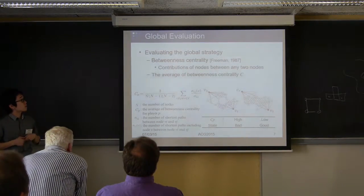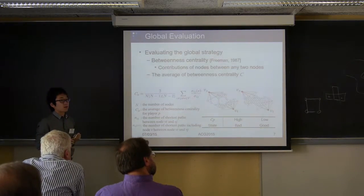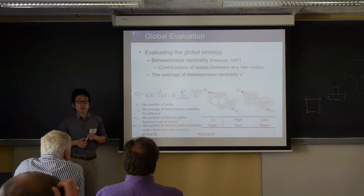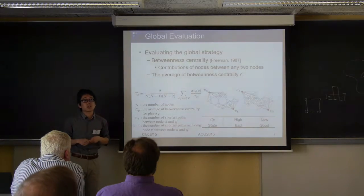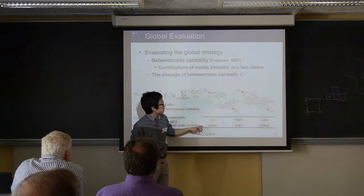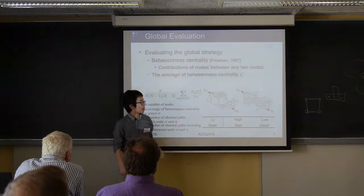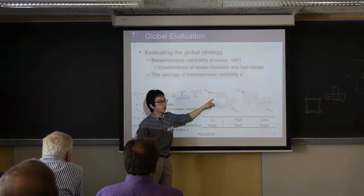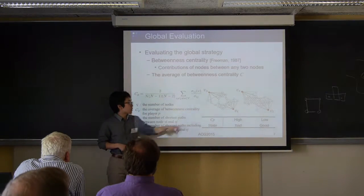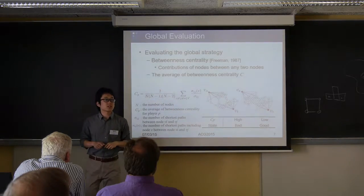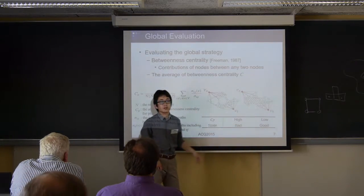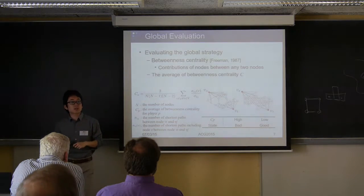For global evaluation, we use the average of betweenness centrality to evaluate the global strategy. Betweenness centrality is a network characteristic calculated as the variety of paths between two nodes. A high value of the average betweenness centrality is a bad state because a player must plan strategy for certain high-centrality nodes and cannot be said to have a wide strategy. However, a low value of the average betweenness centrality is a good state because there are many paths on the board.